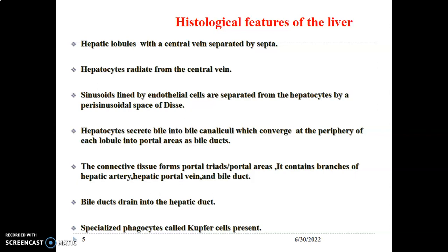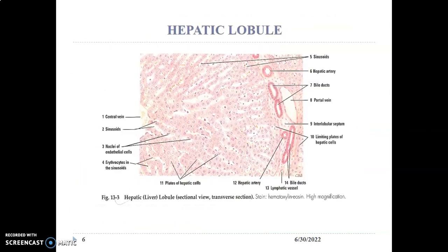The corners of the hexagonal hepatic lobule contain the portal triad made up of the hepatic portal vein, hepatic artery, and the bile ducts. The bile ducts drain into hepatic ducts. Other cells present in the liver include phagocytes called Kupffer cells, which are members of the monocytic phagocytic system and have an immune role.